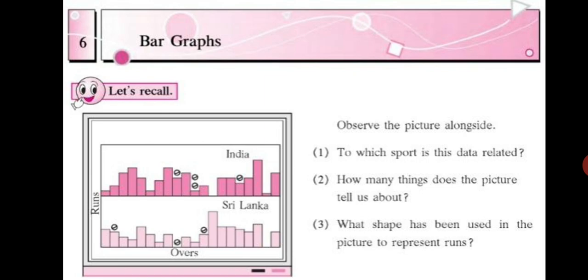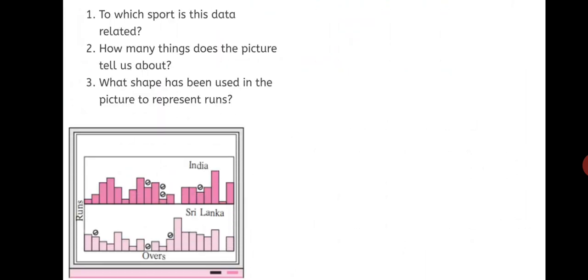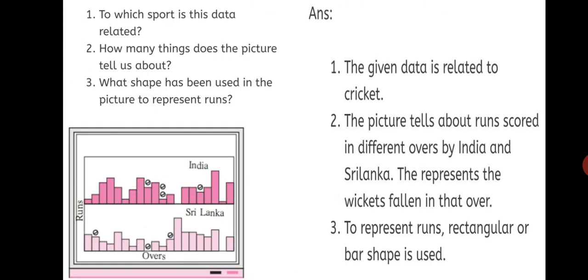So, in this chapter you are going to study about bar graphs. Let's have a look at the answers to these questions. The given data is related to cricket. First question is answered here. Second, how many things does the picture tell us about? The picture tells us about runs scored in different overs by India and Sri Lanka. The picture represents the wickets fallen in that over.